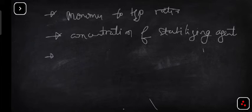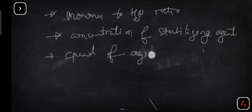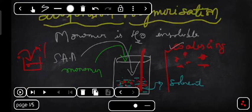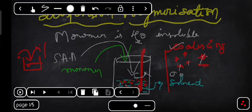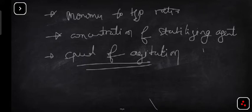The last factor on which the size of the monomer droplet depends is the agitation speed — that is, the speed of stirring. If you are stirring at a much faster rate, the droplets will break down into smaller droplets. If your agitation speed is very low, then you will have bigger droplets. So it depends upon the speed of agitation. On these three factors — monomer-to-water ratio, concentration of stabilizing agent, and speed of agitation — the size of the monomer droplet will depend.